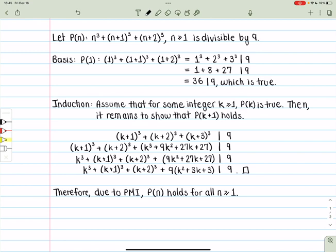So we start with our basis, which is n = 1. We substitute n and put in 1 instead, so we get 1³ + (1+1)³ + (1+2)³. So the 1³ here becomes 1³, this becomes 2³, and this becomes 3³, and we ask, is it divisible by 9?